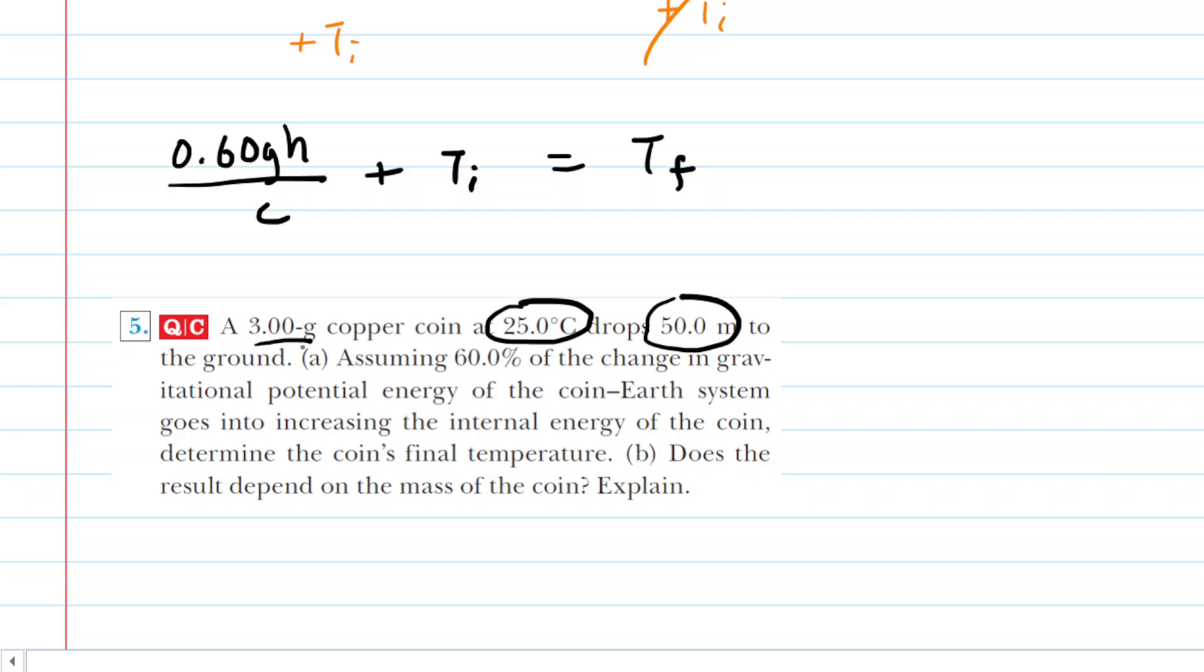The mass is given, but as you noticed, it canceled out anyway. Little g is 9.8 meters per second squared. The specific heat of copper, lowercase c, needs to be looked up in a table.